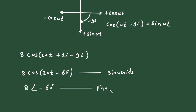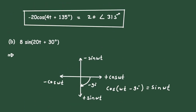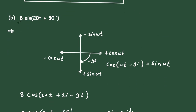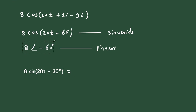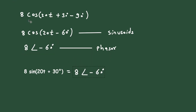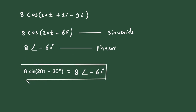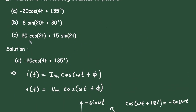This is the phasor form, and this is equal to that value. Next problem is problem C.